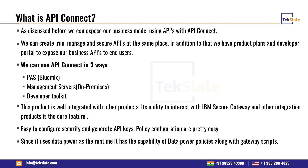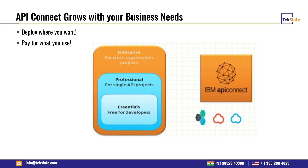Licenses come in three tiers: Essential (for individual developers exploring the product), Professional (a licensed version for single-organization projects), and Enterprise (for cross-organization processes). Depending on your requirement, you can deploy either on-premises or on-cloud.